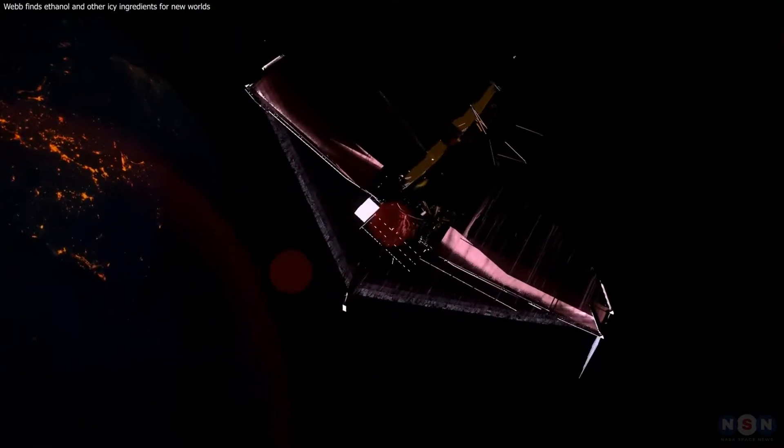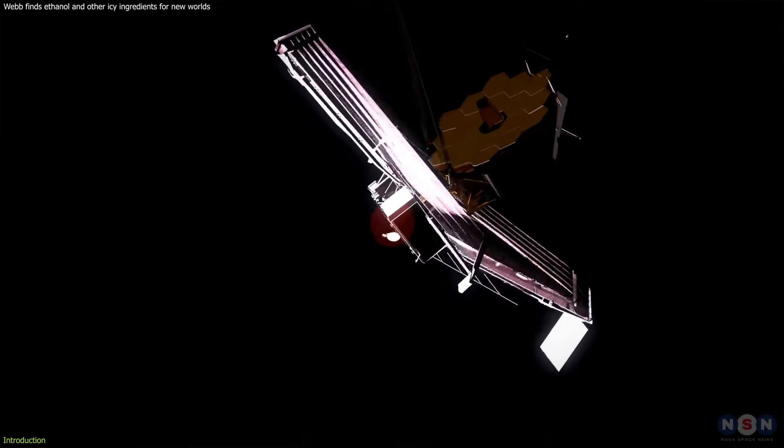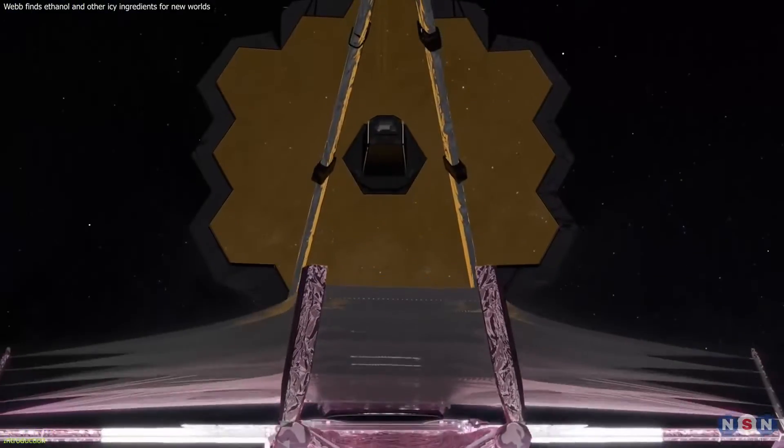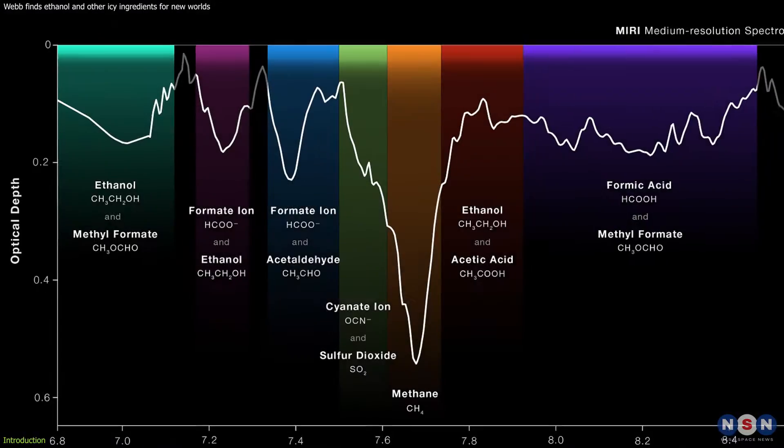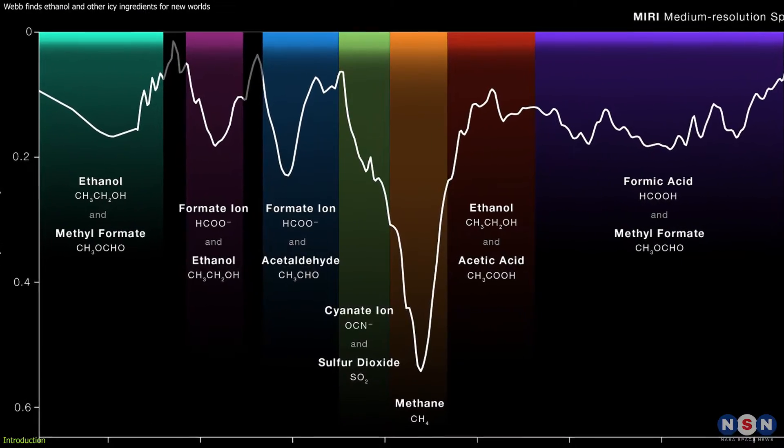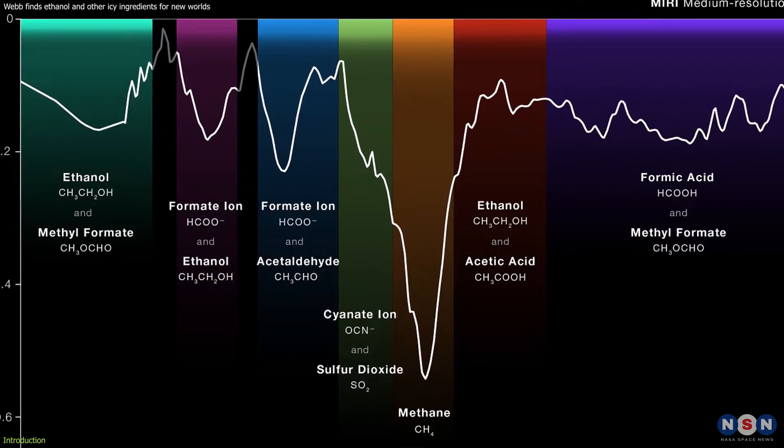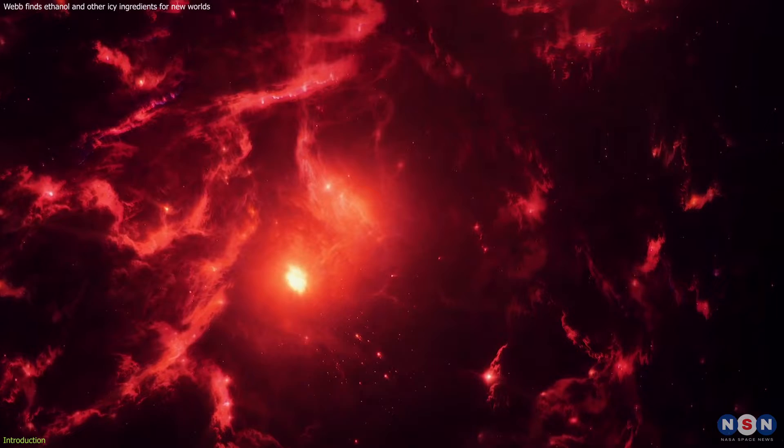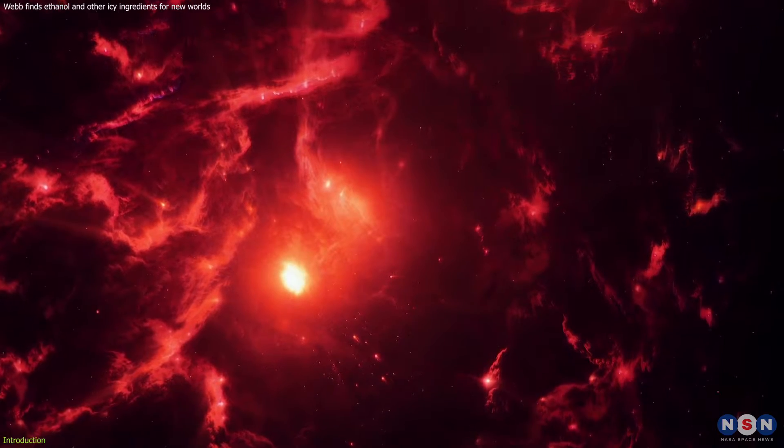The James Webb Space Telescope has made a groundbreaking discovery that's sending ripples through the scientific community. An international team of astronomers using it have discovered a variety of molecules, ranging from relatively simple ones like methane to complex compounds like acetic acid and ethanol, in early-stage protostars where planets have not yet formed.